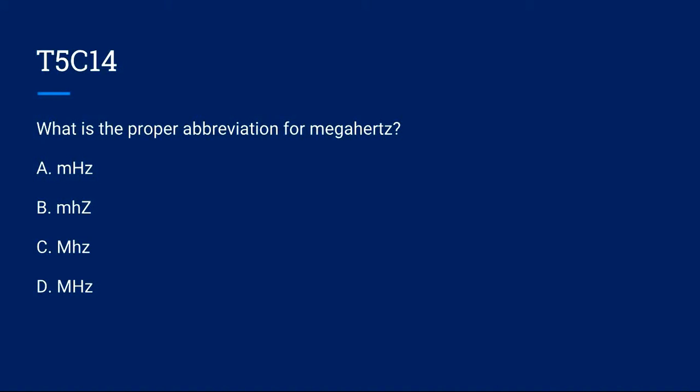T5C14: What is the proper abbreviation for megahertz? A. Lowercase m, capital H, lowercase z, B. Lowercase m, lowercase h, capital Z, C. Capital M, lowercase h, lowercase z, or D. Capital M, capital H, lowercase z. Correct answer is D. Capital M, capital H, lowercase z.